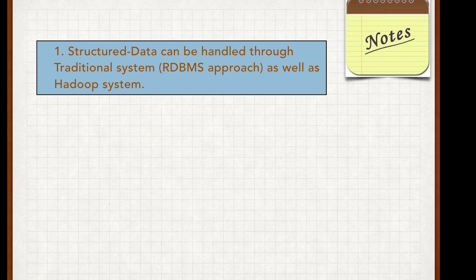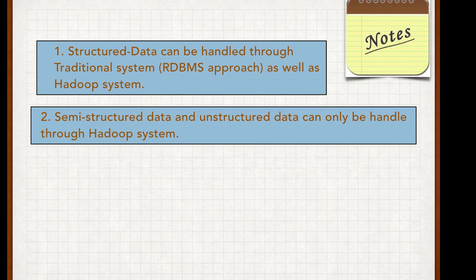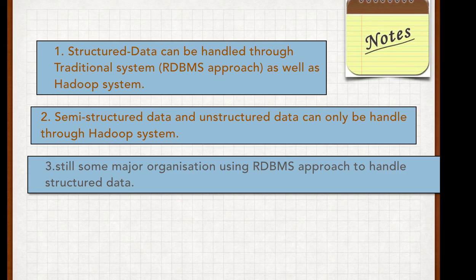This raises a question: if RDBMS can handle structured data, what is the need of Hadoop? And if Hadoop can handle structured data, why can't RDBMS be replaced? The second important note is that semi-structured data and unstructured data can only be handled through the Hadoop system — no RDBMS approach can handle semi-structured or unstructured data.